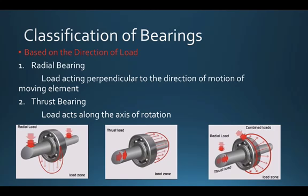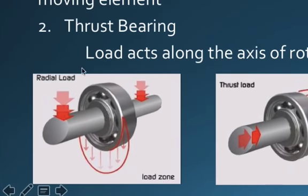Bearings are broadly classified based on the direction of load. The first kind under this classification is the radial bearing. In this kind of bearing, the loading is perpendicular to the axis of the shaft. The red arrow in the picture shows the direction of the load, directed perpendicular to the rotating shaft. So these kinds of bearings are known as radial bearings.